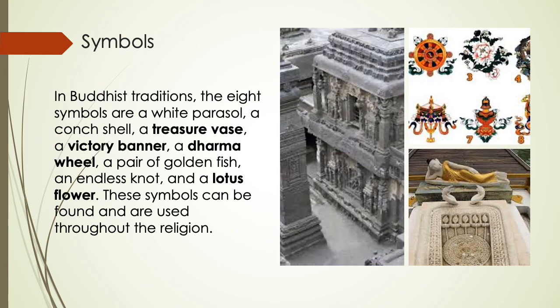Symbols in Buddhist traditions: the eight symbols are a white parasol, a conch shell, a treasure vase, a victory banner, a dharma wheel, a pair of golden fish, an endless knot, and a lotus flower. These are the eight symbols of Buddhism. These symbols can be found and are used throughout the religion. Symbols are very important and can be seen in different paintings, drawings, jewelry, and decorative elements.